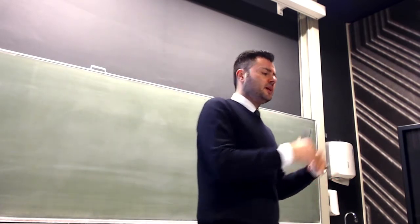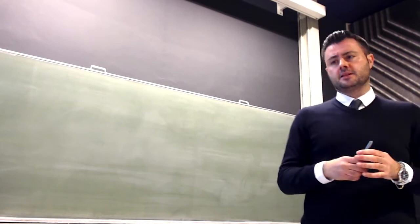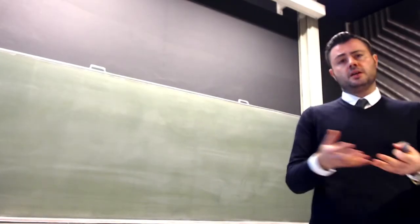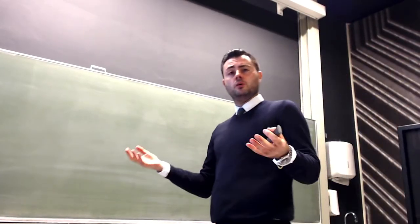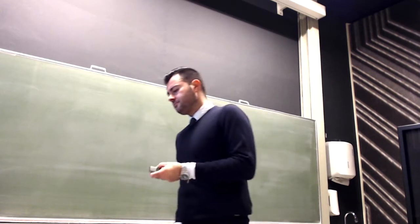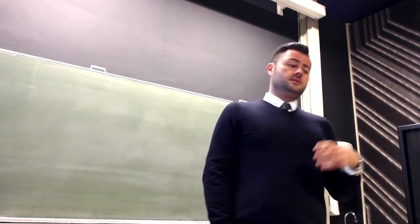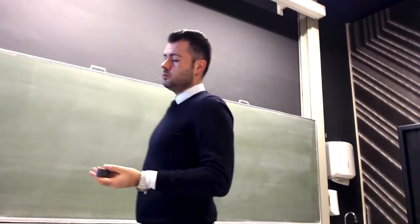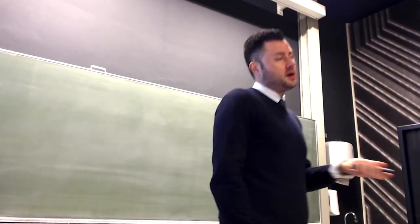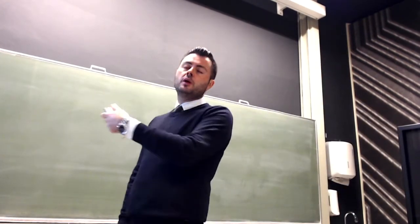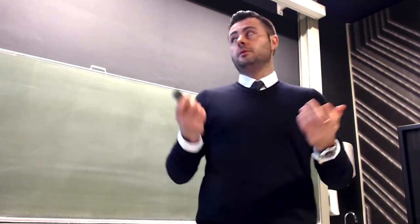Within the model building family, there are several possibilities, but the most used and abused one is the variance-covariance approach. It's nothing more than a generalization of the simple linear normality assumption that we have seen so far. It's a model building approach, which means we are assuming a model, but the parameters are actually computed and estimated using actual data, so every bank will have its own parameters.